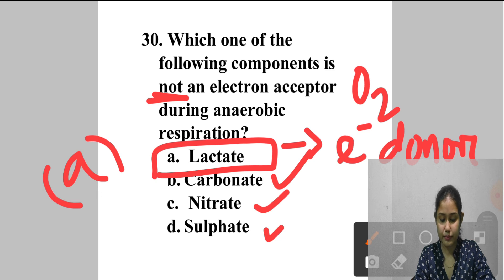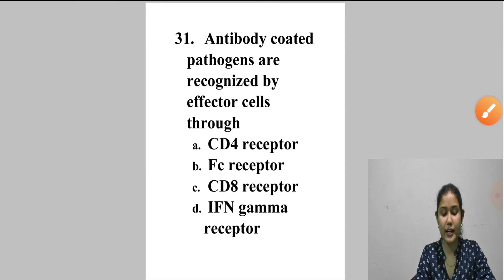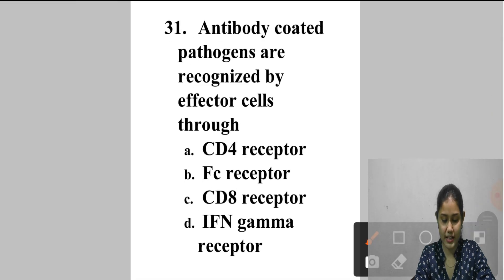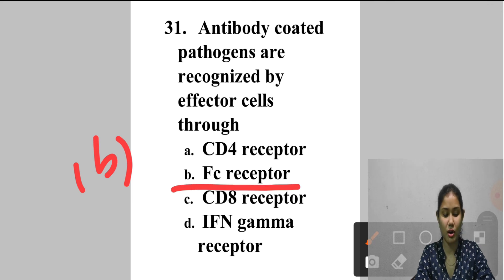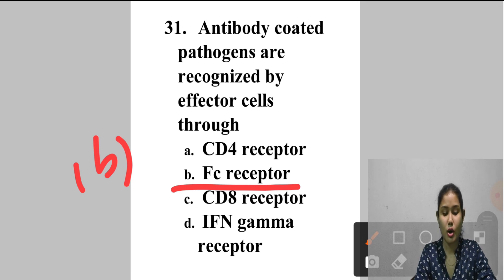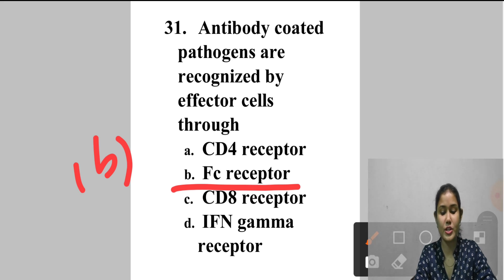Question 31: Antibody-coated pathogens are recognized by effector cells through — A. CD4 receptor, B. FC receptor, C. CD8 receptor, D. IFN-gamma receptor. FC receptor proteins are found on the surface of certain cells contributing to immune system protection. FC receptors bind to antibodies attached to infected cells or invading pathogens, enabling antibody-coated pathogens to be taken up by phagocytes, improving antigen presentation to T cells. Answer is option B — FC receptor.